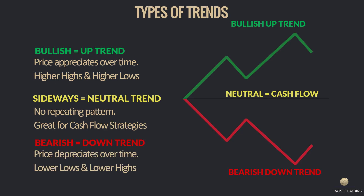The third type of trend is what we call a bearish downtrend, where price depreciates over time, creating the pattern of lower low, lower high — lower low, lower high.